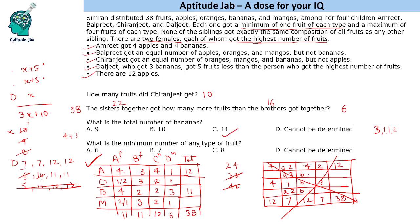The minimum number of any type of fruit: looking at the columns, the values are 3, 2, 1, 6 for one type; the total could be 7 or 8. The minimum of any fruit type is 7. So if one type totals 7, the other totals 8 and vice versa. The answer is 7 fruits as the minimum of any type. This completes the solution set and all the answers to the questions.